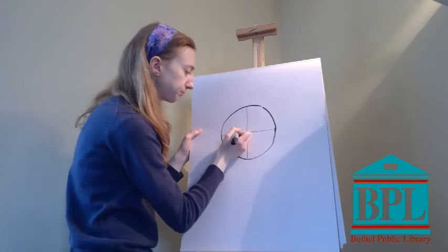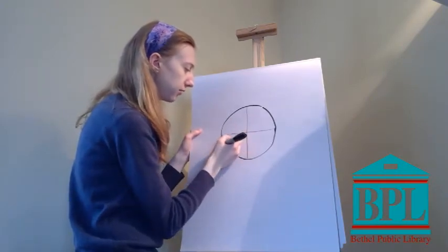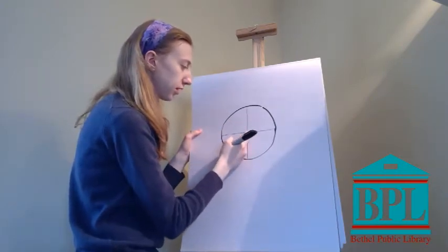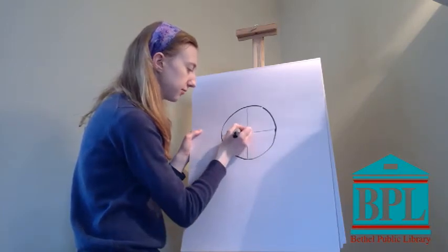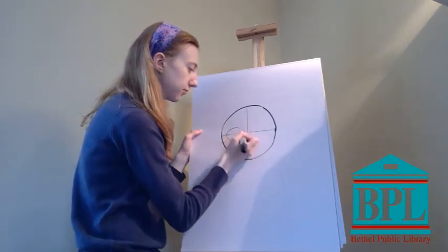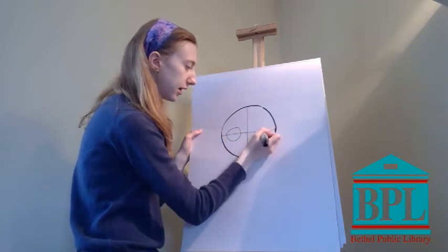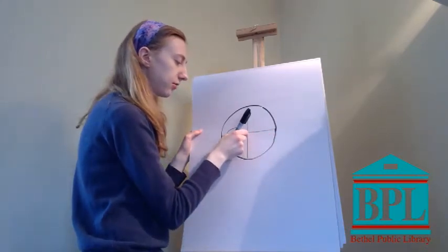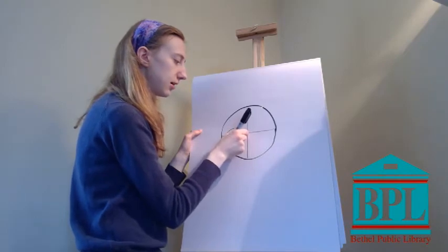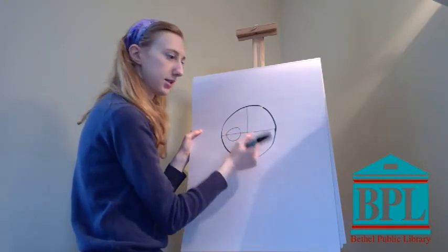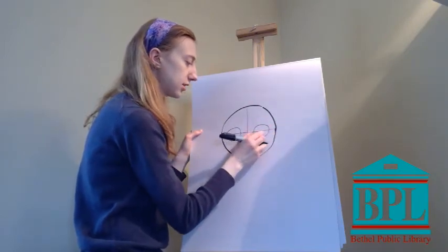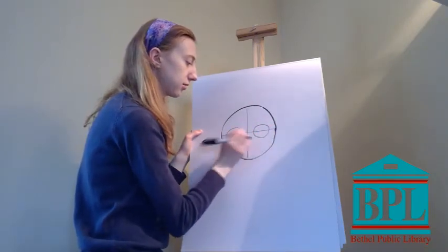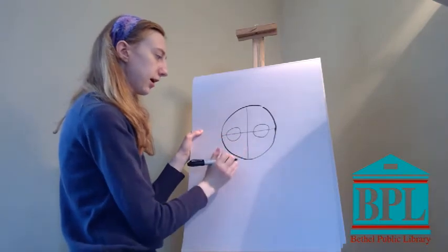So I'm going to draw an eye kind of in the middle between the middle line and the side like this, and I'm going to do the same on this side. And I want to make sure that I left this much space on this side and I leave this much space on this side so that my eyes are the same length apart. So now I have my eyes.